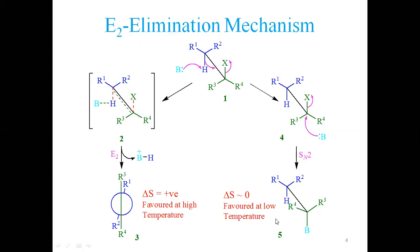Two key strategies to dominate elimination: first, high temperature favors elimination and disfavors substitution; second, using a good base that is not a good nucleophile favors elimination. Bases such as DBN and DBU will be presented at the end of the course — they are very good bases but very poor nucleophiles, making them ideal for promoting elimination.